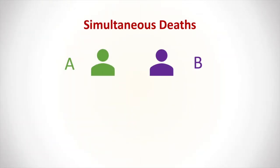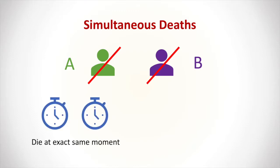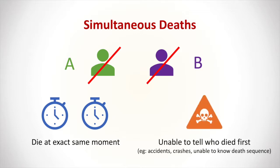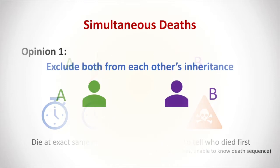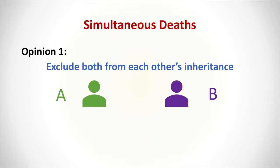Simultaneous deaths. This happens when two people die at the same time and it is hard or impossible to know who died first or second. This scenario can come up when people die at exactly the same moment, or in cases of an accident or mass casualties where we are unable to tell who died first and who died second. So how do we calculate the shares if both A and B are heirs to each other? The majority opinion is that we exclude both from each other's inheritance.